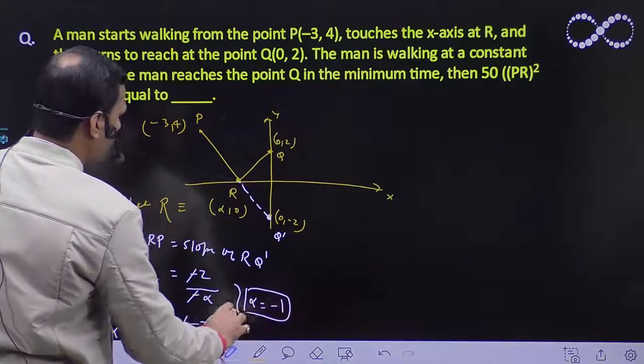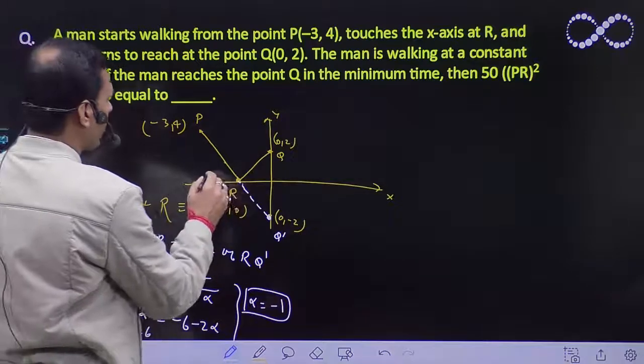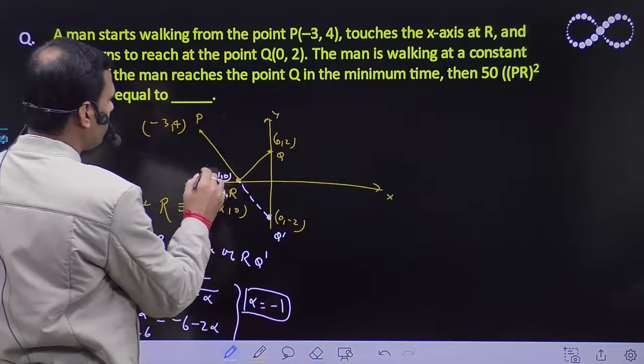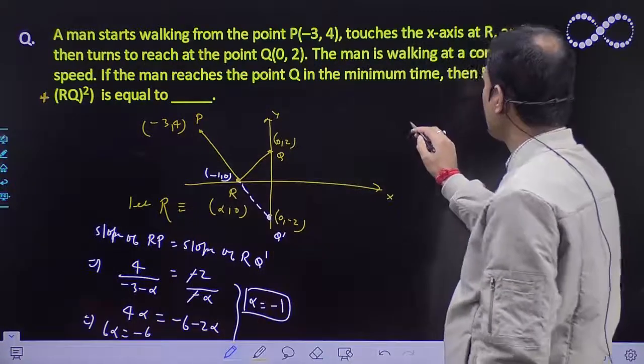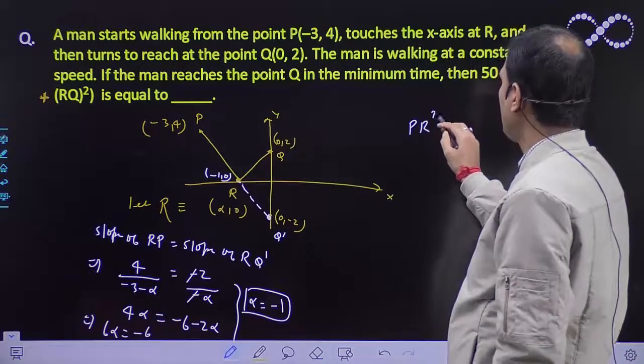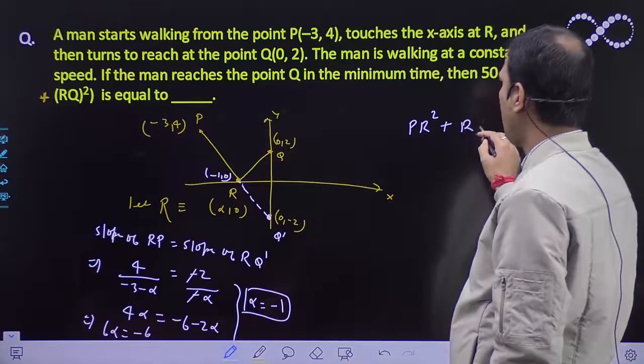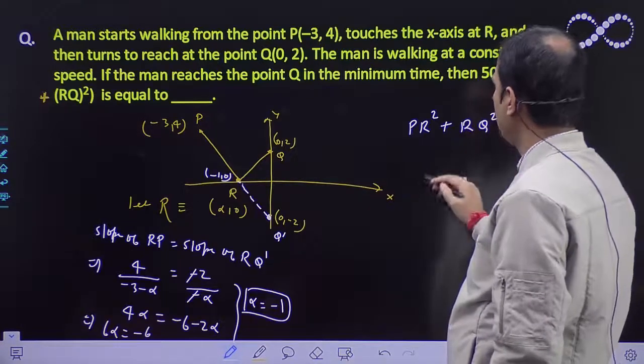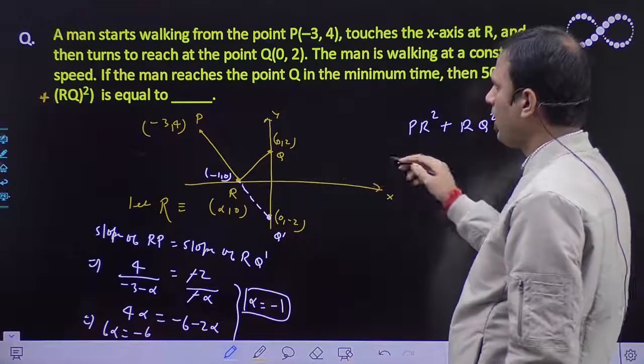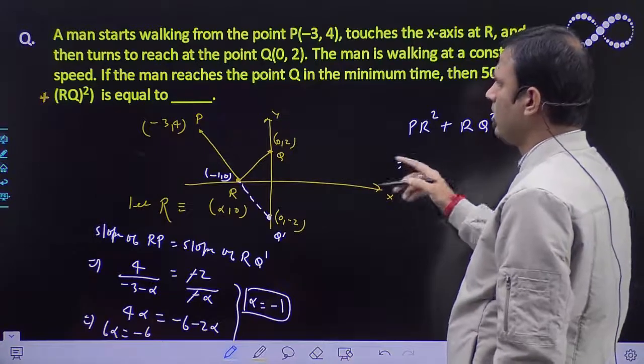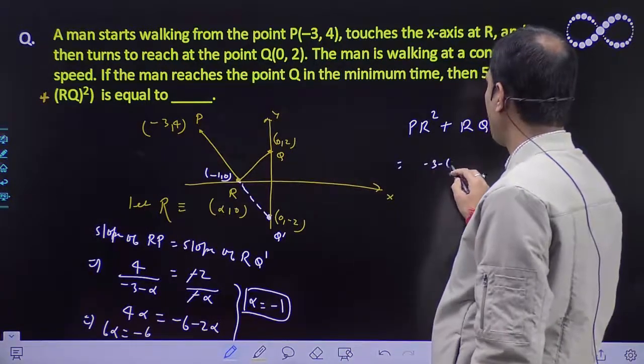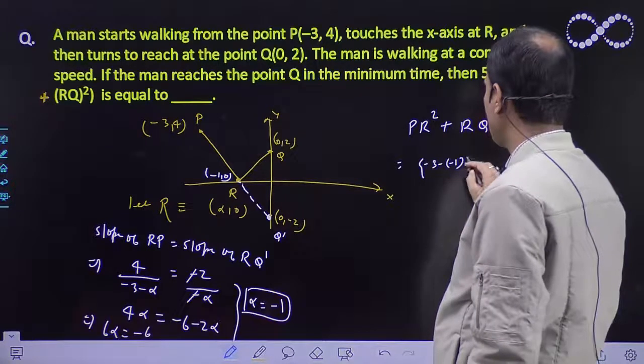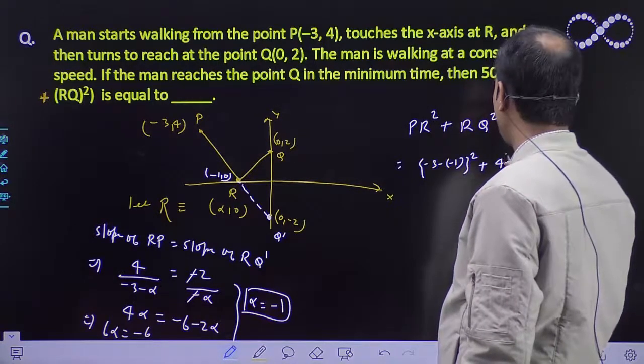The value of α is -1, so the coordinate of R is (-1, 0). Now find PR² + RQ². PR distance will be (-3 - (-1))² + (4 - 0)², that's (-2)² + 4², which equals 4 + 16.